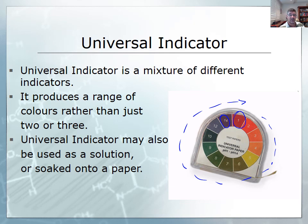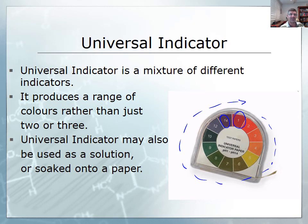Universal indicator can be used either in paper form like litmus paper, or as a solution. We can also use pH meters and pH probes. These are the important indicators to remember — that comparison table is a very important one to have noted down for future recall. These will be very useful when we look at neutralization reactions. Thanks for watching, we'll see you next time.